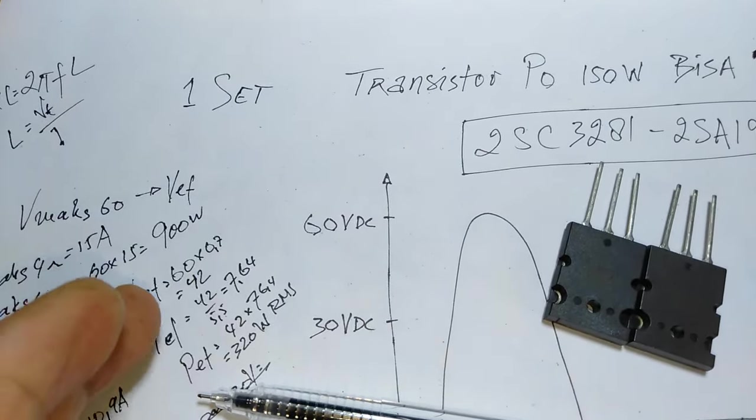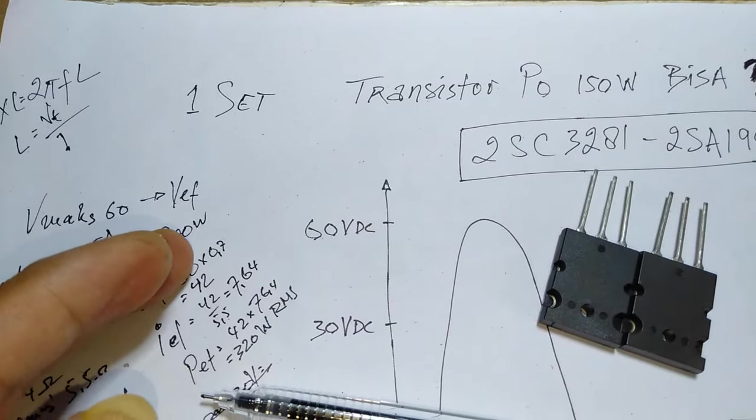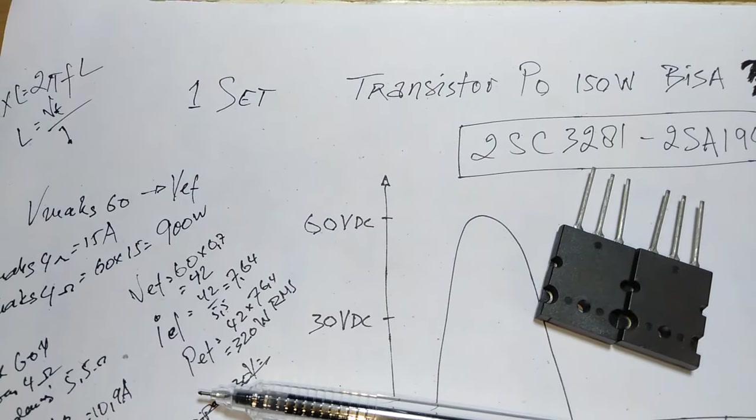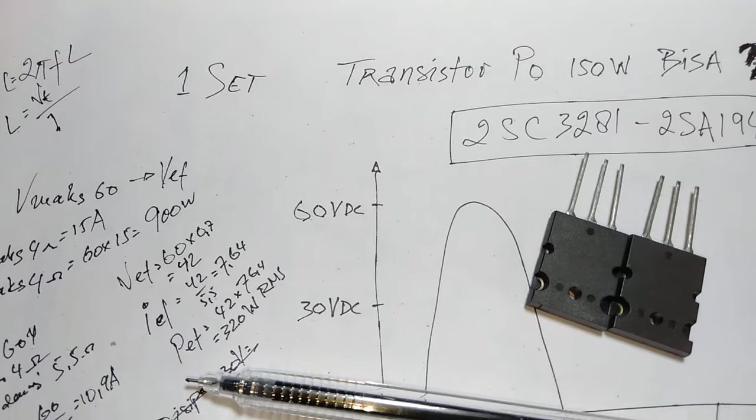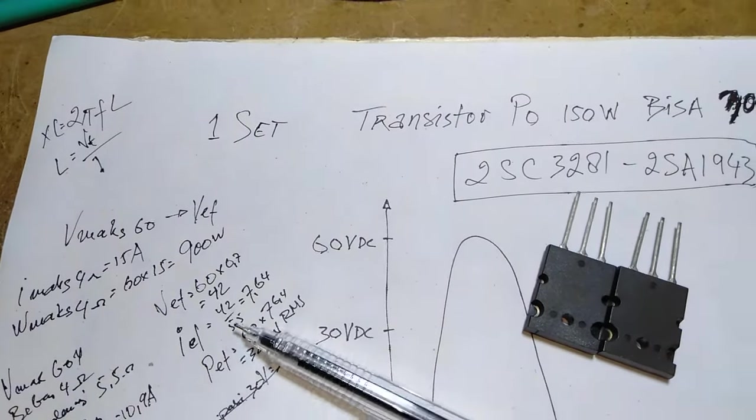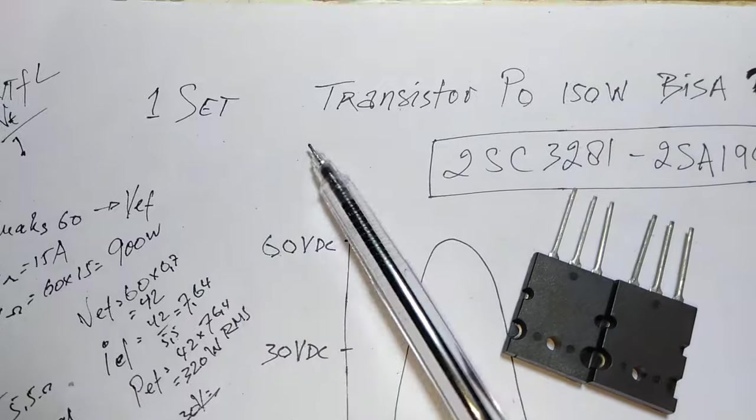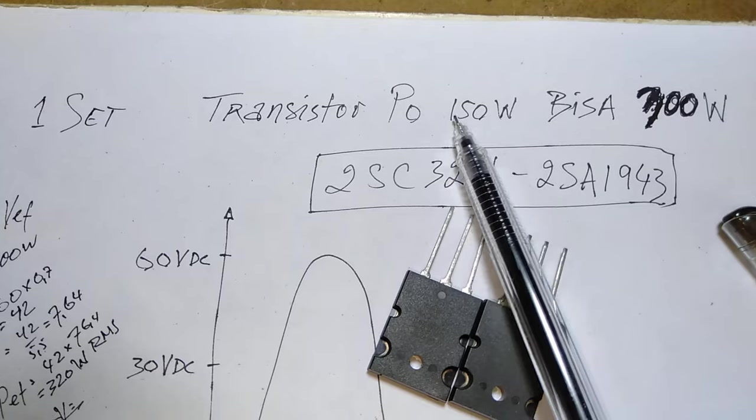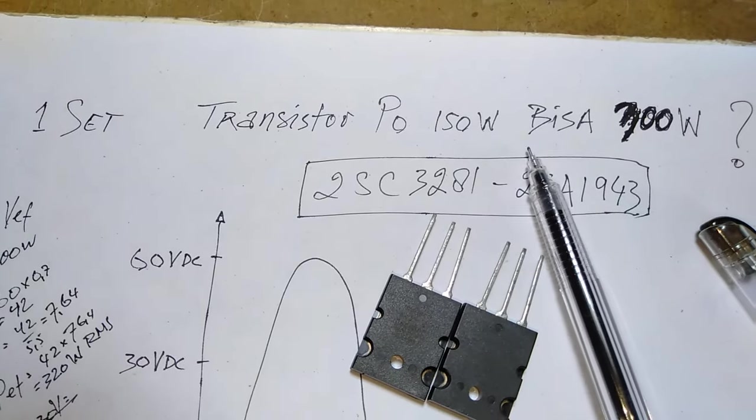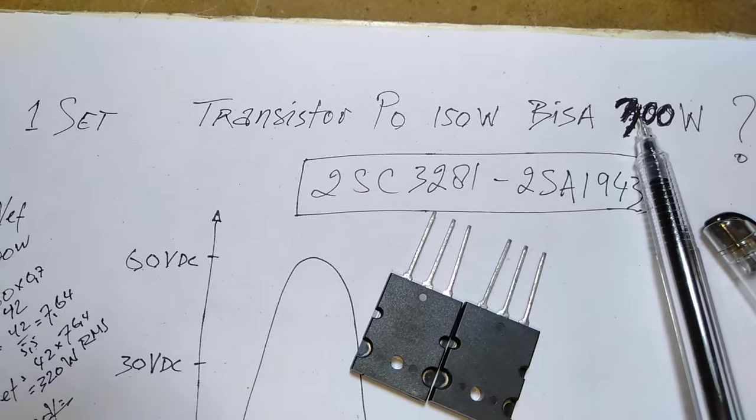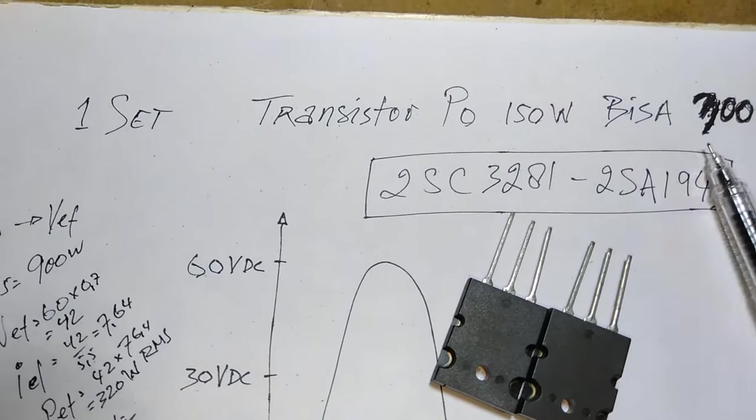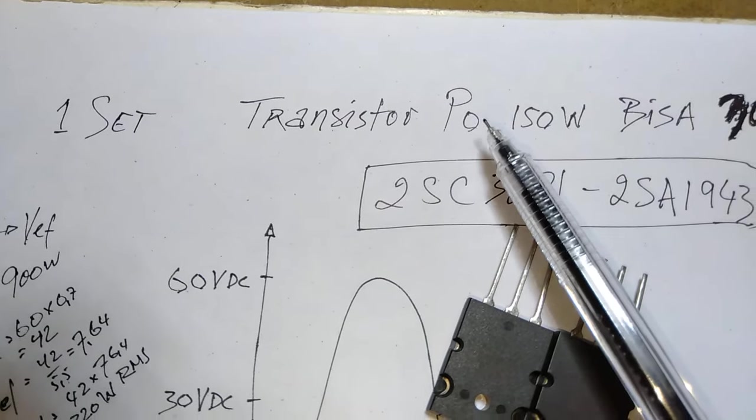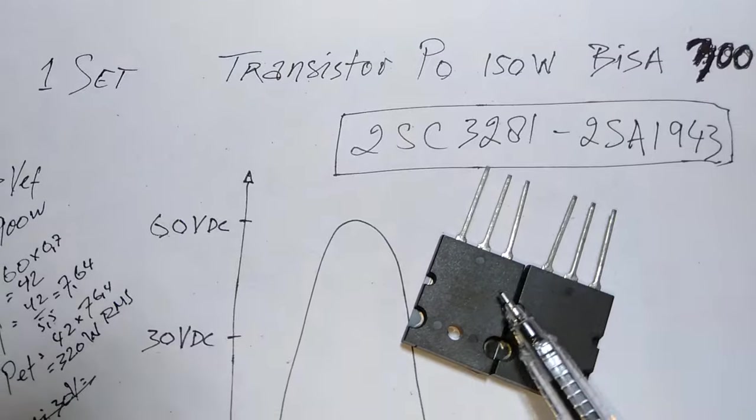Satu set transistor yang di data itu katanya PO 150 watt, apakah bisa 300 watt ya. Nah bahkan lebih bisa ya, bahkan lebih guys ya. Nah begini ceritanya ya, itu yang tertulis PO di data sheet itu guys, itu bukanlah watt daripada transistor ini guys. Watt bukan watt kerjanya, tapi watt disipasi panas badannya yang diizinkan pabrik, nggak boleh lebih dari 150 watt.